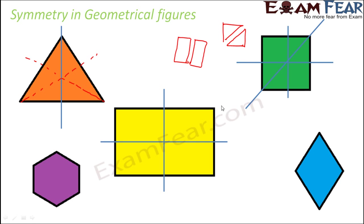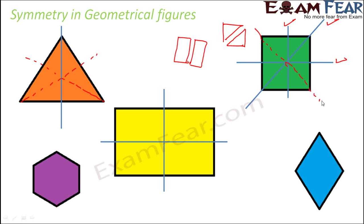This diagonal line doesn't act as a line of symmetry for the rectangle, because if you try to fold the rectangle along the diagonal, the two halves do not cover each other completely. So in the case of a square, you have one horizontal, one vertical, one diagonal, and one more diagonal line of symmetry — basically four lines of symmetry in total.